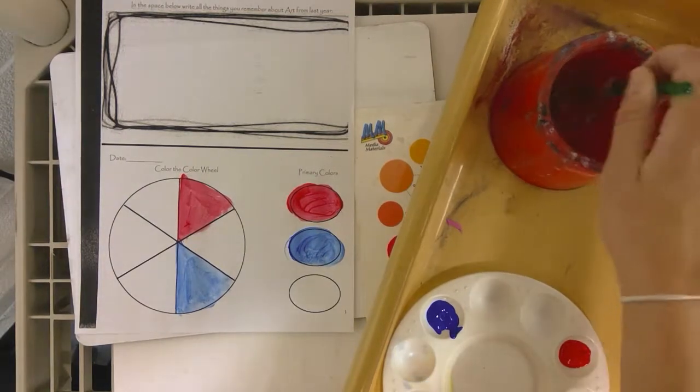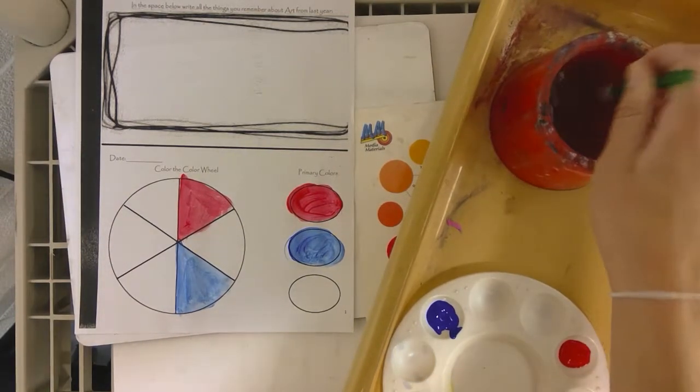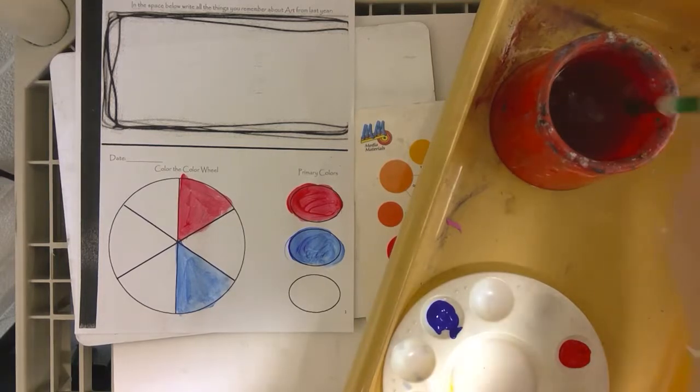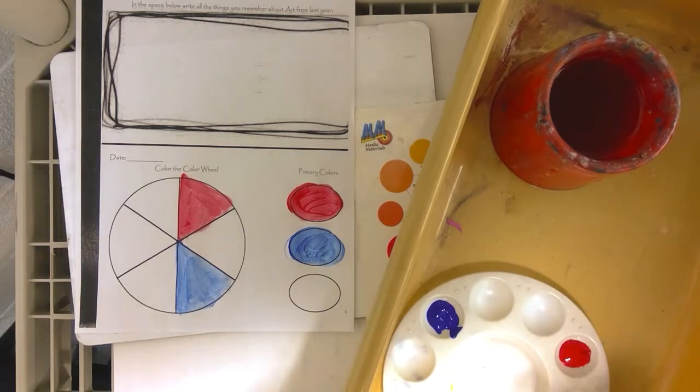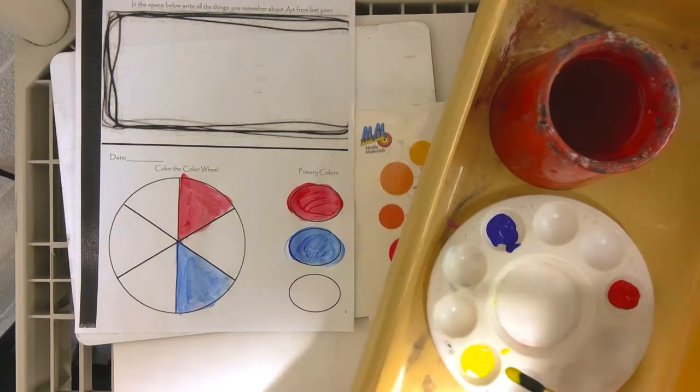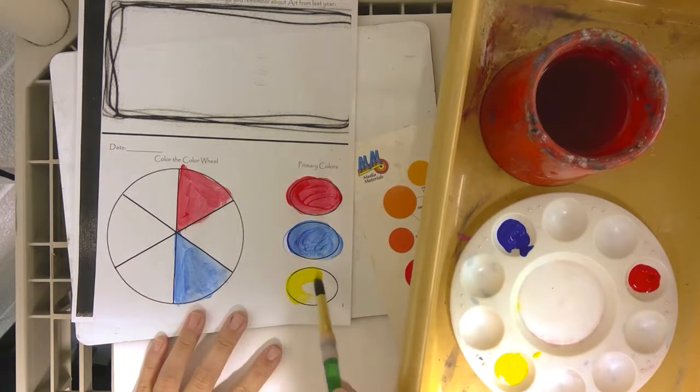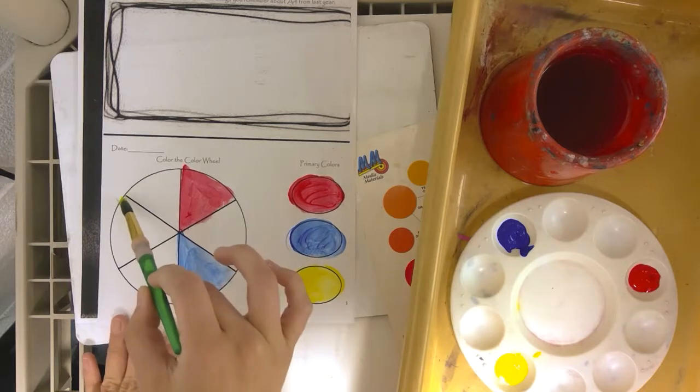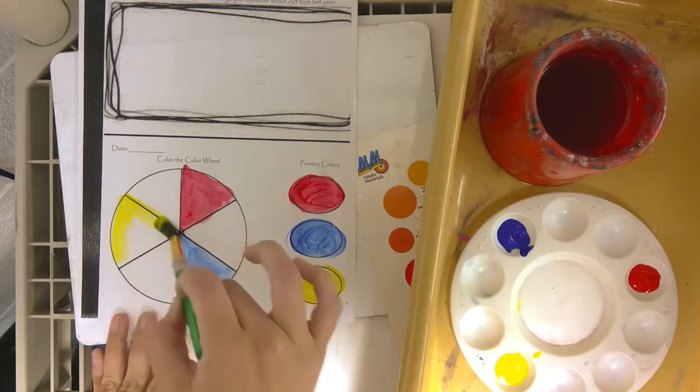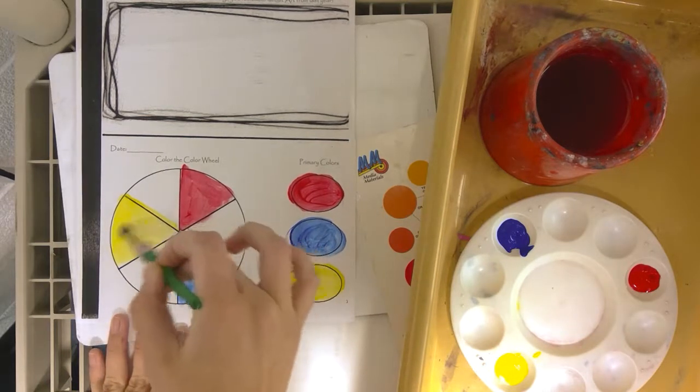Again, we're going to wash off our paintbrush. Dipping it on the bottom, swirling it around, and just pressing it on the side of our water cup. Our last primary color is yellow. We're going to put yellow in the last oval. We're going to skip one. Please make sure you skip one and add another piece of the pie.